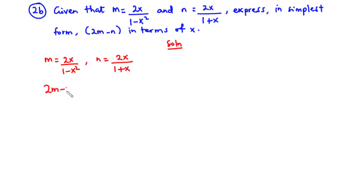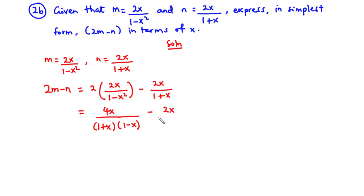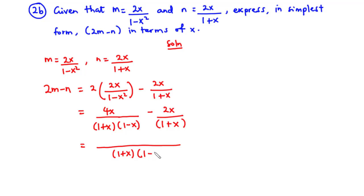So 2m minus n is equal to 2 times 2x over 1 minus x squared. Let's multiply across, so we have 4x over 1 minus x squared. And for 1 minus x squared, you can express that as 1 plus x times 1 minus x — minus 2x over 1 plus x. Now let's find the LCM. The LCM between 1 plus x, 1 minus x, and 1 plus x is 1 plus x times 1 minus x.